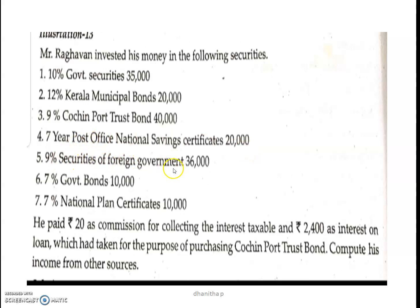9% securities of foreign government — interest is gross-up, so 36,000. Then 7% government securities — 10,000. Then 7% National Plan Certificate. 7% National Plan Certificate and 2-year post office savings are among the exempted securities.